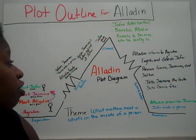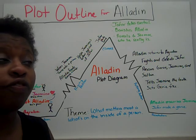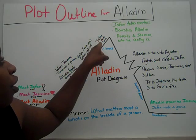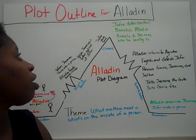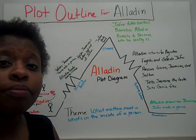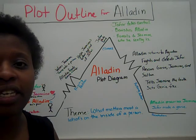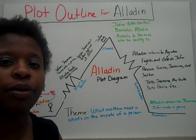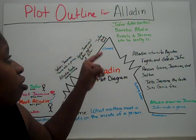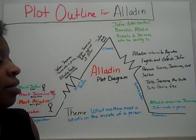Aladdin helps Jasmine's father get rid of Jafar. Jasmine and Aladdin realize what Jafar is doing. Almost at the very crux of the climax, Jafar realizes that Aladdin is the prince in disguise, and he realizes he's only the prince because of the lamp. So Jafar makes a plan to steal the lamp. He succeeds, and that leads us to the climax.